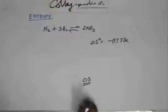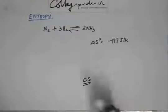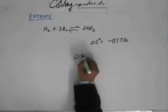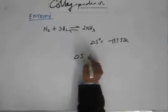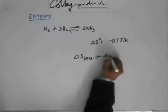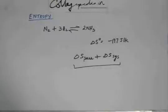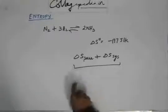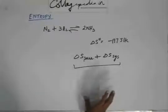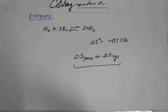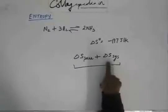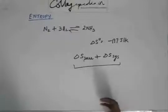What you have to do is calculate the delta S of the surroundings as well, because delta S of surroundings plus delta S of system — if this sum is positive, then we can say the reaction is spontaneous. That's how we defined delta S: if delta S total is positive, the reaction is spontaneous; if not, it is not spontaneous. Delta S must include not just the system but also the surroundings that are interacting with it.